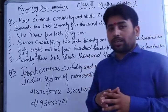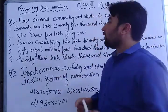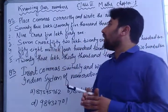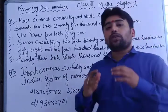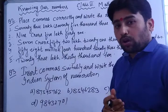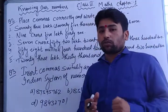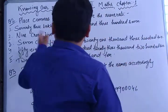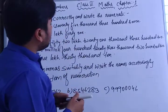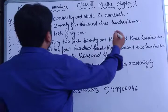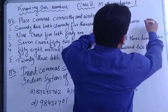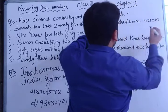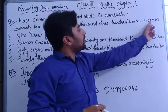First of all, in question 2, the number is 73,75,307. You should first know how to write the number, and then know how to put the comma. So here is the number: 73,75,307. You can count the place values — unit, tens, hundred, thousand, ten thousand, lakh, ten lakh.